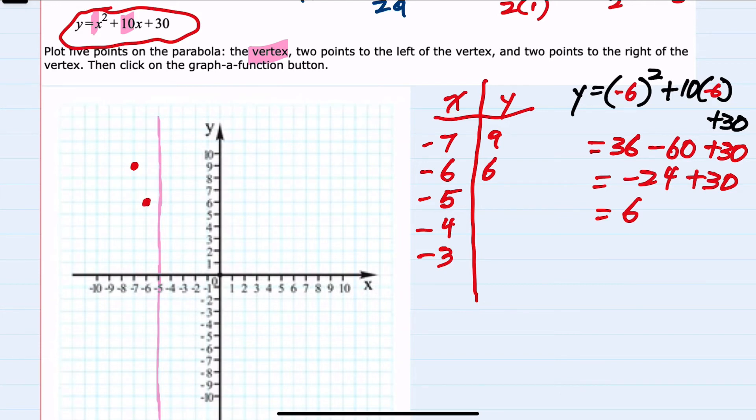Our next point is x equals negative 5. Substituting that into our equation, negative 5 squared is 25, 10 times negative 5 is negative 50, plus 30. This time we have 25 minus 50, minus 25, plus 30, or positive 5. So we have our vertex here at minus 5, 5.